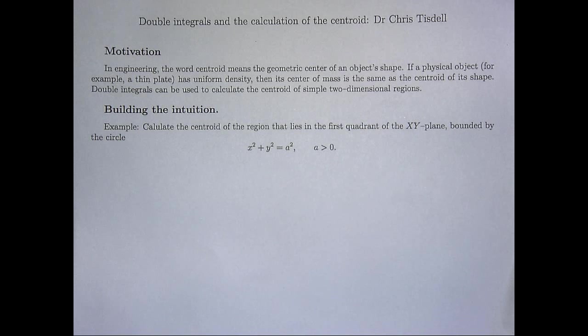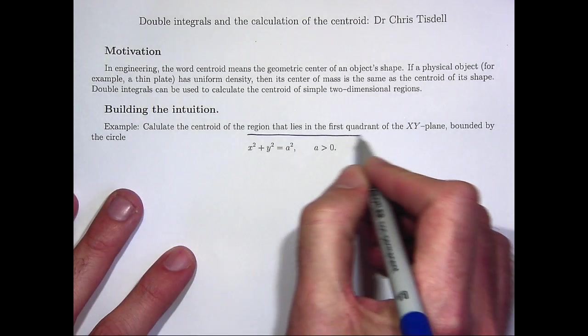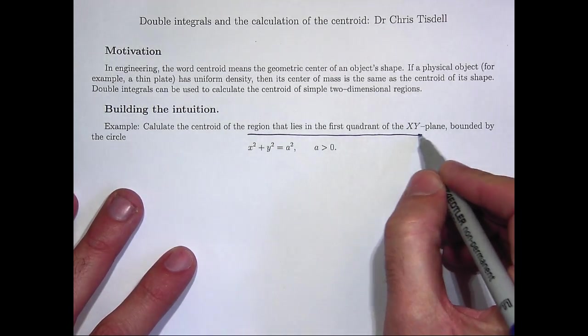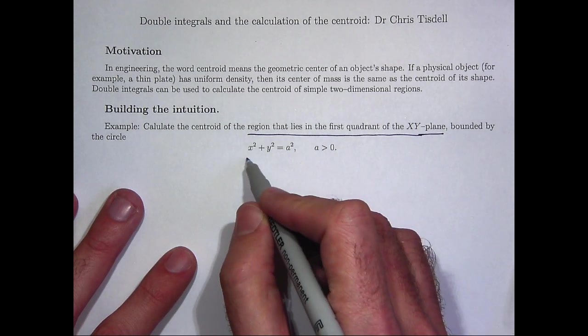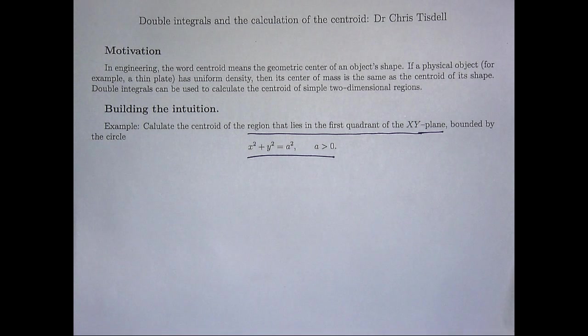So let's have a look at the following question. We're given a region that lies in the first quadrant of the x-y plane and it's bounded by this circle. A is a positive constant. So essentially, you've got a quarter of a disc and you want to find the centroid of that region. So a good way of starting these problems is to draw a picture.